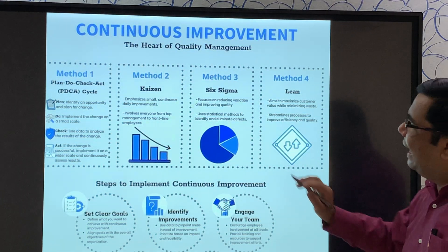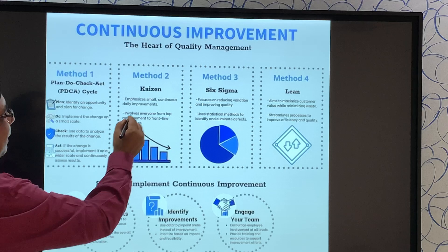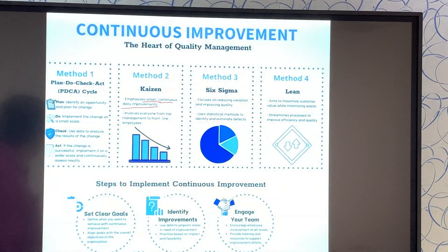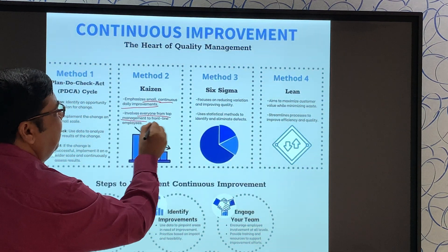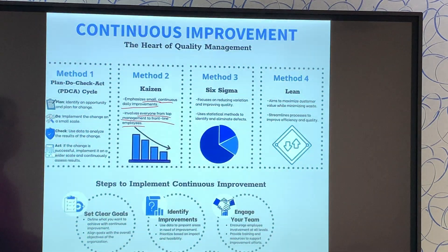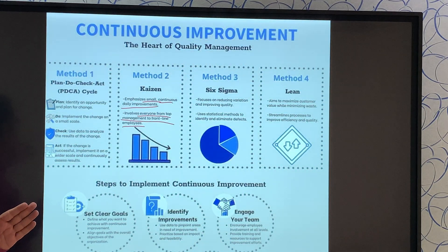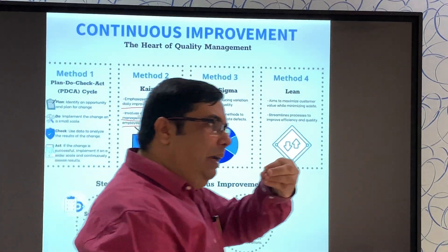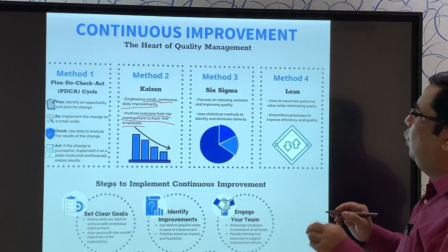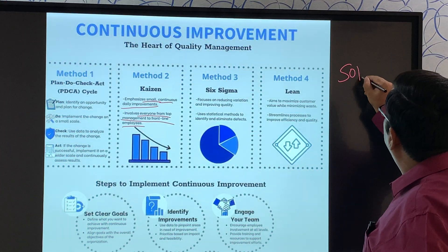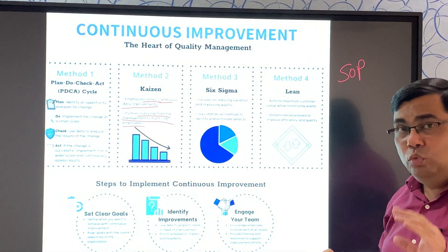The next method is Kaizen. It emphasizes small, continuous daily improvements and involves everyone from top management to frontline employees. If some activity needs to be implemented, you need to break it down into multiple small actions. For example, if you want to implement some practice, let's say revising an SOP — immediately you cannot revise the SOP. There are steps.